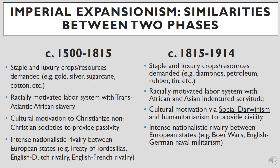Although there are great differences between these two phases of expansionism, there are significant points of comparison. Between 1500 and 1815, one of the main economic motives was the acquisition of staple and luxury crops and resources in high demand — gold, silver, sugarcane, spices, and cotton. After 1815, as industrialization progressed, the demand shifted to include diamonds, petroleum, rubber, tin, and other industrial metals and mineral resources, though it in no way negated the continued demand for previously mentioned goods.